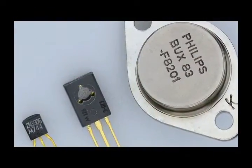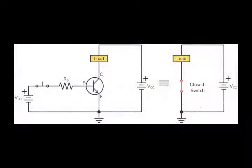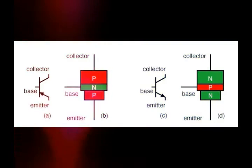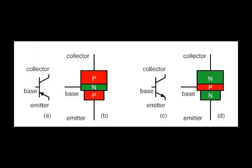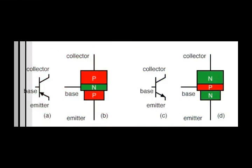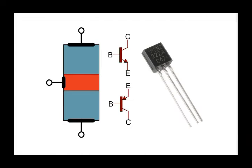Bipolar junction transistors (BJTs) are turned on by an input current applied to the base. BJTs have low input impedance. According to the type of connection and the placement of these bases, they are made in two types: PNP and NPN.